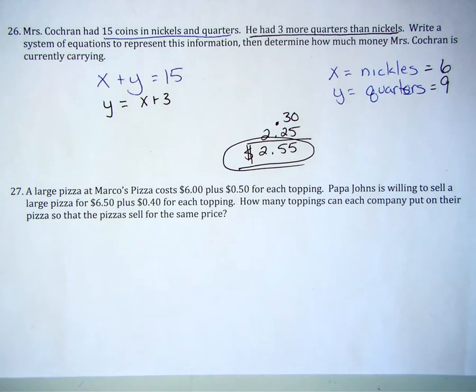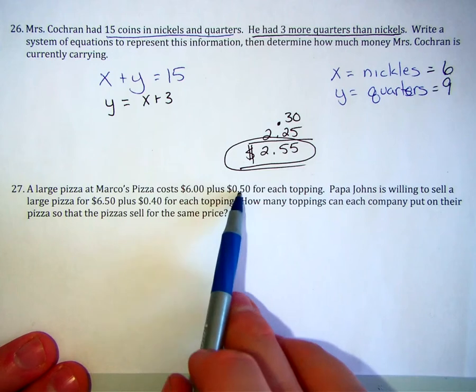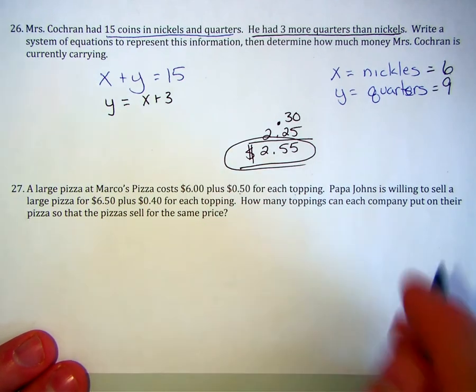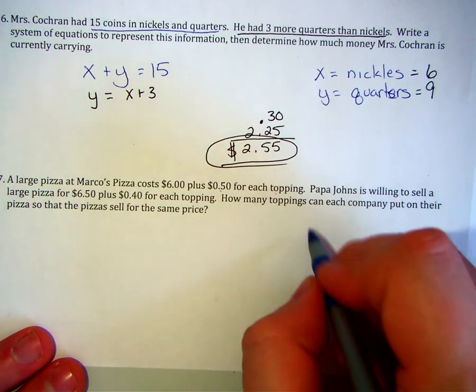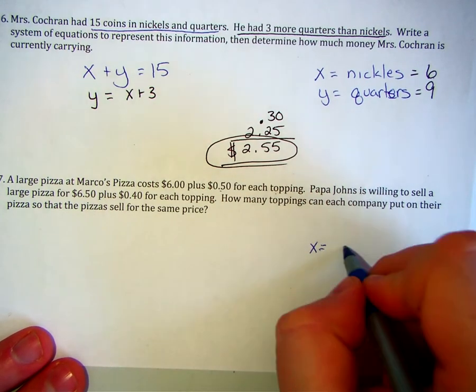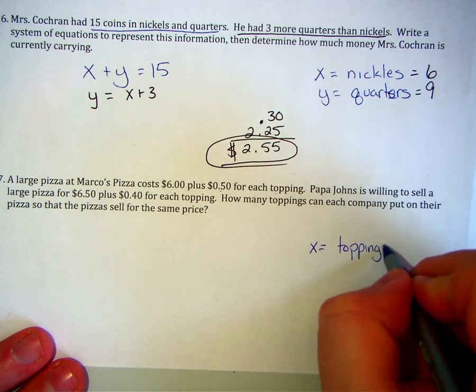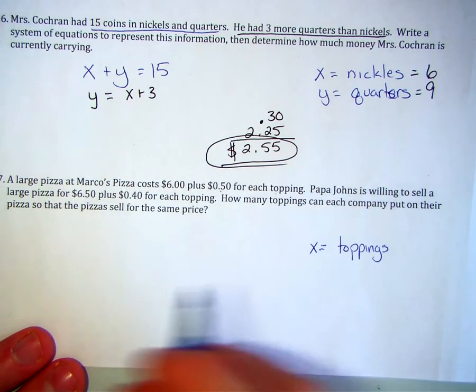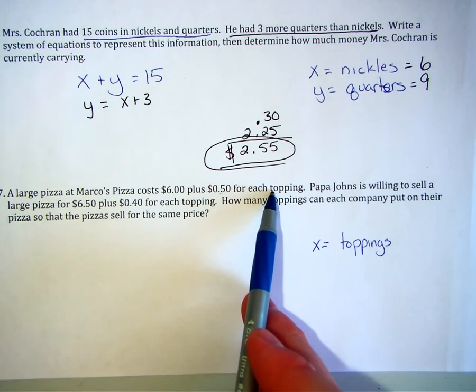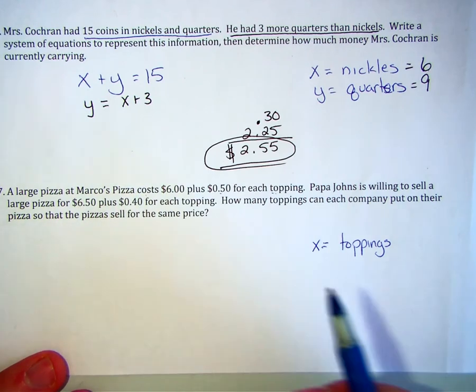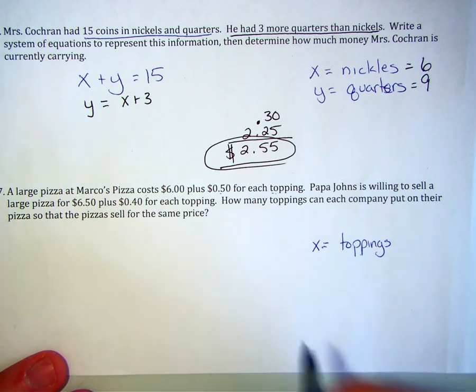Number 27. A large pizza at Margo's costs 6 dollars plus 50 cents for each topping. By this point in the problem, we should start to realize that I'm going to have multiple toppings. X is going to be equal to quantity of toppings. Now, the quantity of toppings that I put on impacts the cost that I pay. So, my toppings is my independent variable. The cost is dependent on the number of toppings.